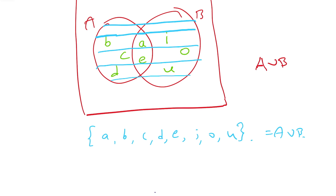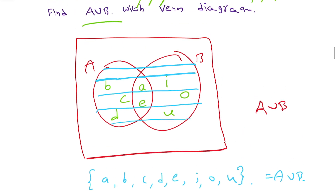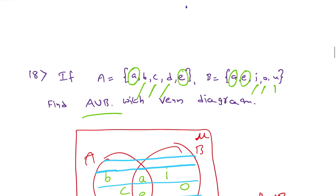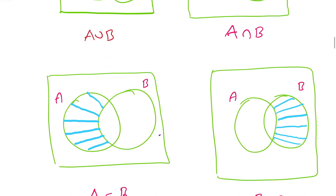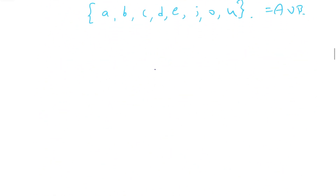Also, don't forget to mark the universal set in the top right corner of the rectangle — it can be represented with a special symbol or simply capital U.